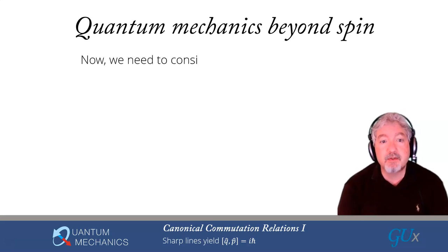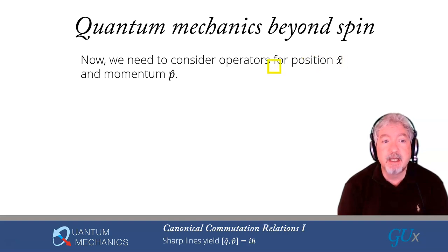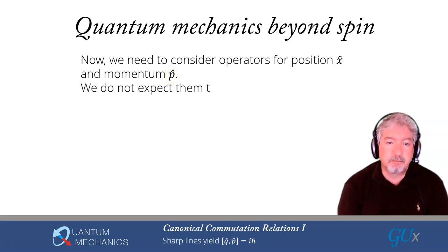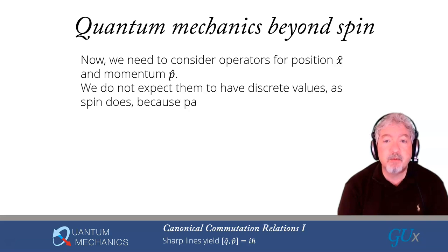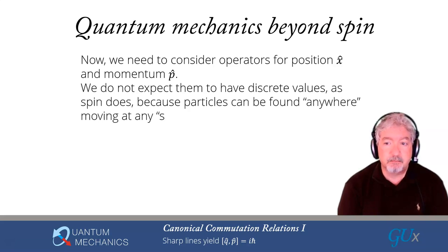This means we have to introduce some operators. We're going to consider the operators for position that we're going to call x-hat and for momentum that we're going to call p-hat. In general, we don't expect position and momentum to only take discrete values in the way that spin took only discrete values, because the particles can be found anywhere and moving at any speed. And it will turn out that that is the case.